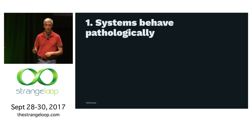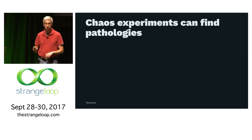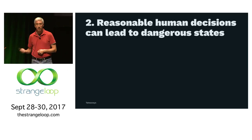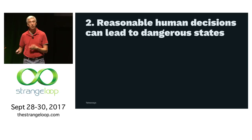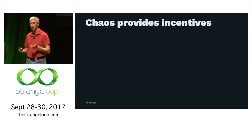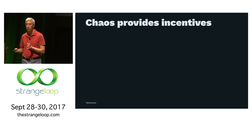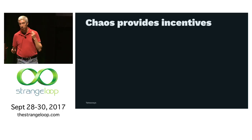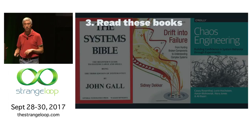Takeaways from this talk. One: systems behave in really weird, pathological ways, but you can use chaos experiments to root out some of those pathologies. Two: systems get into unsafe states because human beings are making reasonable decisions — it's not that people are being sloppy or stupid, these are reasonable people making reasonable decisions. If you do chaos engineering or automate your experiments, you can provide incentives so that the drift doesn't happen as much: if they start loosening their standards and you run an experiment and see the problem, hopefully they'll catch it. And if you get nothing else from this talk, you should really read these books: Systems Bible by John Gall, Drift into Failure by Sidney Decker, and a book written by my teammates and me, which we're giving away for free at the Netflix booth on the third floor.